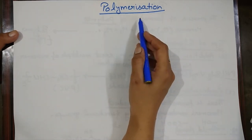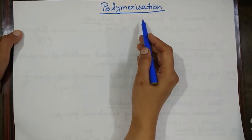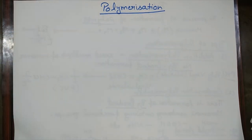Before this topic, we have studied some basic concepts of polymers, where we understood the monomer, polymer, repeat unit, and degree of polymerization. So today, we are starting from the next part.